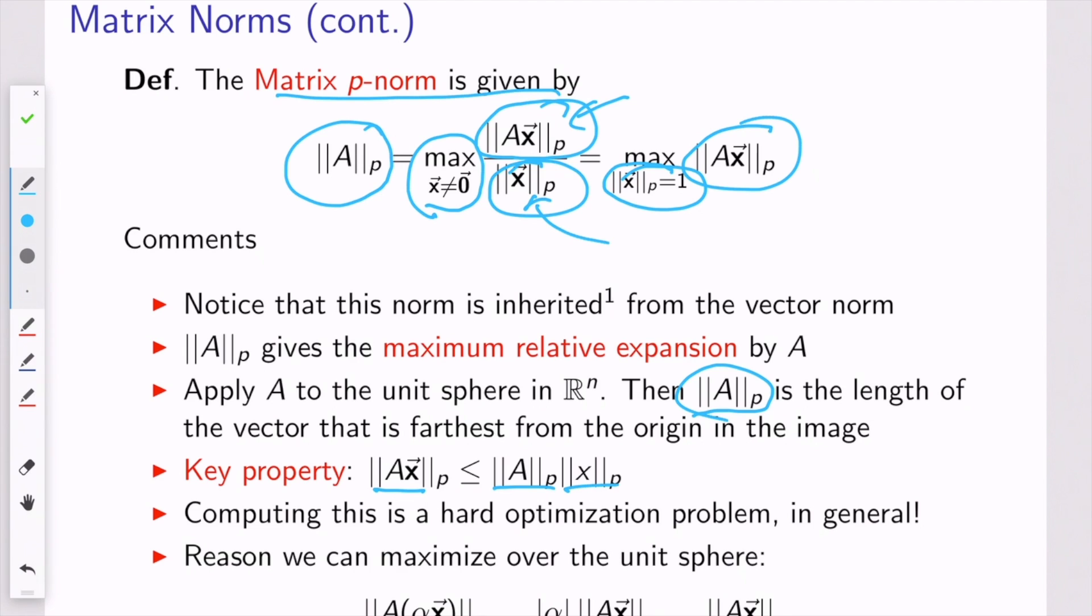Now, I should say that computing the p-norm of a matrix is actually kind of hard. It's an optimization problem. You have to look over an infinite number of vectors and find the one that makes this business up here be the largest. So let's show that in this optimization problem, you can restrict yourself to looking at the unit sphere, which saves some work.